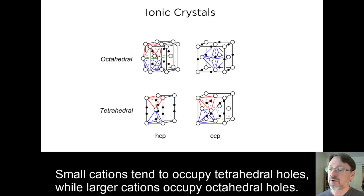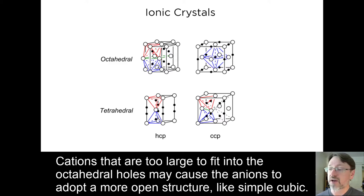Small cations tend to occupy tetrahedral holes, while larger cations occupy octahedral holes. Cations that are too large to fit into the octahedral holes may cause the anions to adopt a more open structure, like simple cubic.